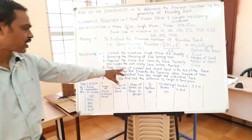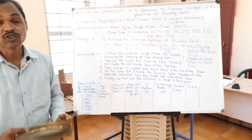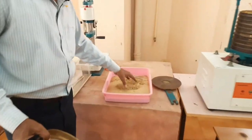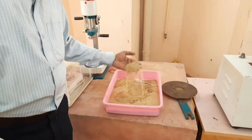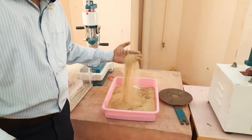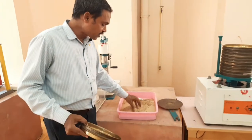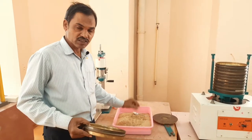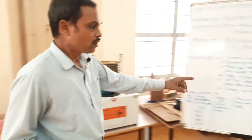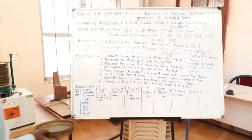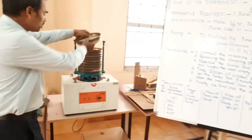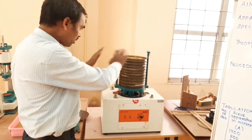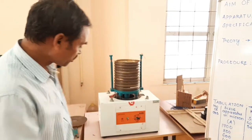Next, take 200 grams of washed and dried foundry sand — this is the final condition of the sand. We take 200 grams of dried and washed sand, and place it in the top of the sieve. After connecting it, we start the timer — this is the timer.